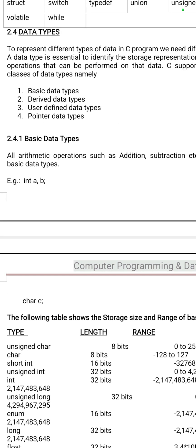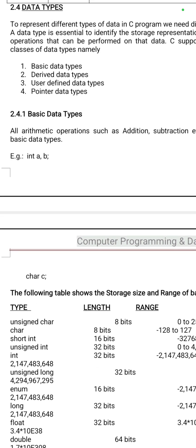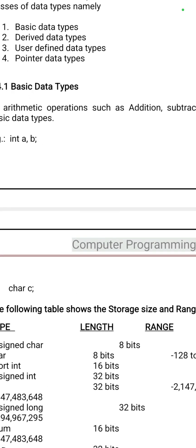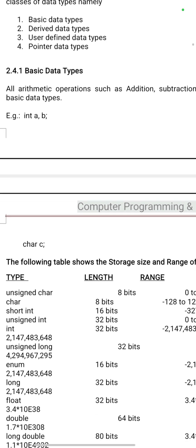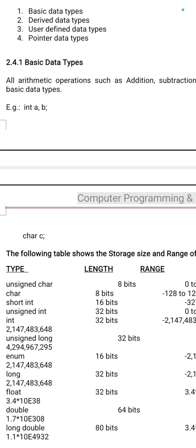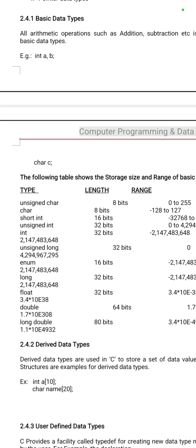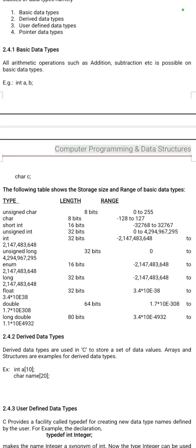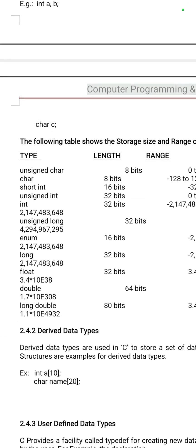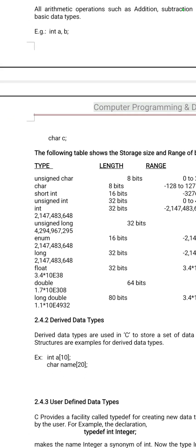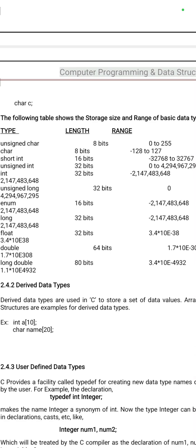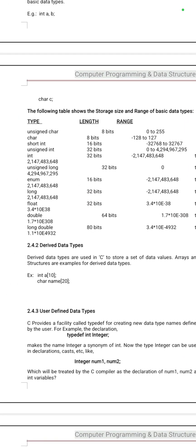Basic data types include integer, float, and character. The syntax is: data type followed by any variable name. Integer data type takes 2 bytes — 2 into 8, that is 16 bits, depending upon the compiler. Float takes 4 bytes, character takes 1 byte which is 8 bits.